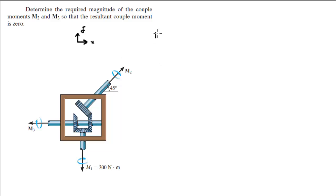So we have M1, we have M2, and we have M3, and we're going to write the Cartesian vector forms.